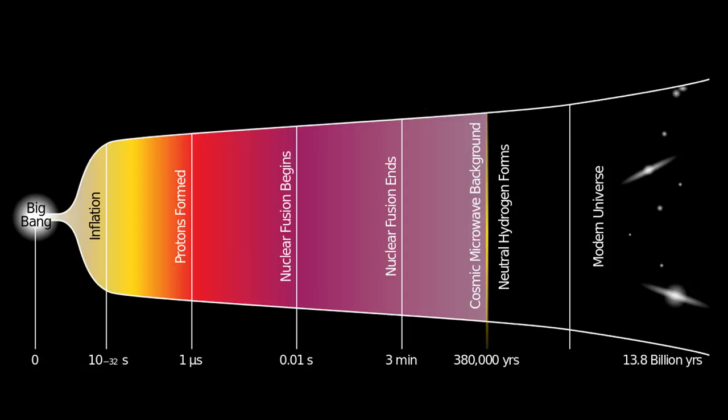We all know the number one traffic law in the universe. Yep, nothing can travel faster than the speed of light. And in case you were thinking of speeding out there in the universe, the speed limit is 186,000 miles per second, or 299,000 kilometers per second.